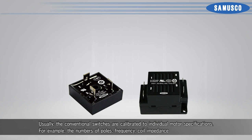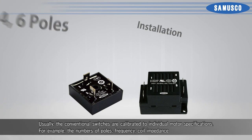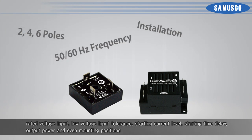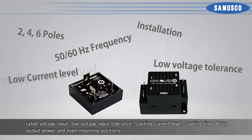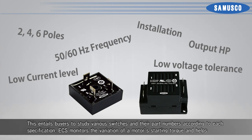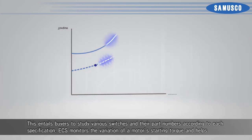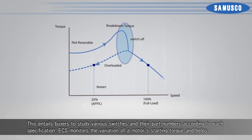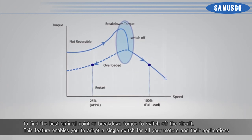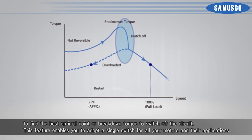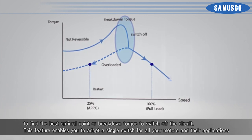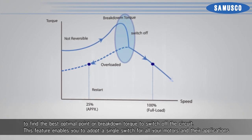Usually, the conventional switches are calibrated to individual motor specifications — for example, the number of poles, frequency, coil impedance, rated voltage input, low voltage input tolerance, starting current level, starting time delay, output power, and even mounting positions. This entails buyers to study various switches and their part numbers according to each specification. ECS monitors the variation of a motor's starting torque and helps to find the best optimal breakdown torque to switch off the circuit. This feature enables you to adopt a single switch for all your single-phase motors and their applications.